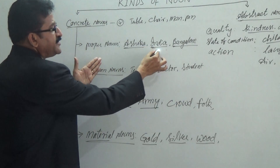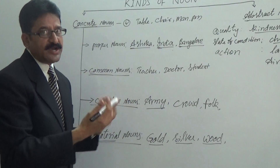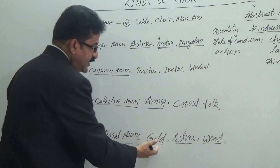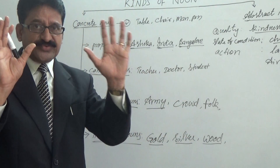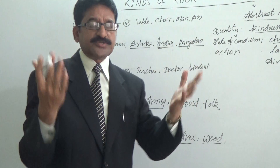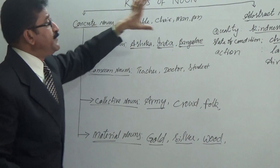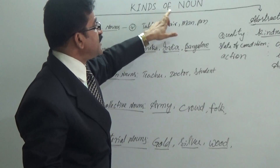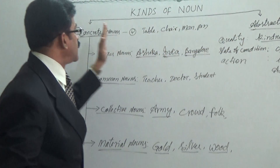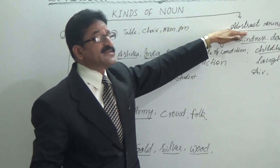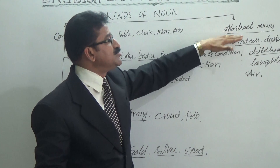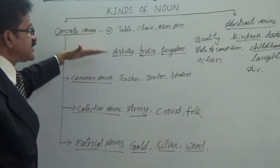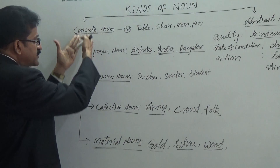All these things — teacher, doctor, student, army, crowd, folk, gold, silver, wood — are all visible and have physical features. All these are physically existing, possessing a physical feature, so they are called concrete nouns. Basically, nouns are divided into two kinds: concrete nouns and abstract nouns. Abstract nouns are not visible; the abstract things that we feel are called abstract nouns, and those which are physically existing are called concrete nouns.